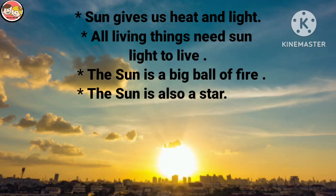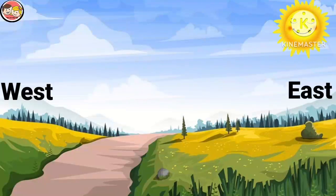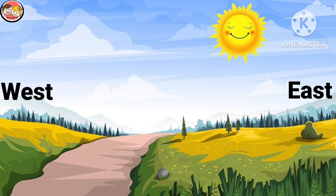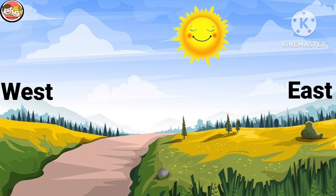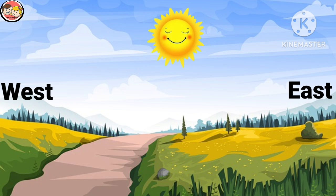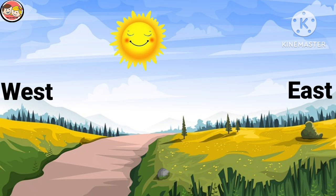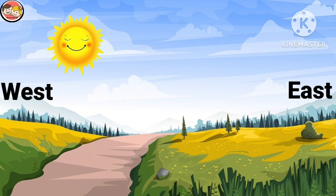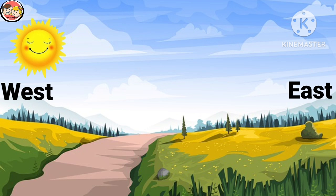The sun is a big ball of fire, and the sun is also a star. Every morning the sun rises in the east, which means the sunrise begins a new day. At noon the sun shines brightly and is right overhead. In the evening the sun sets in the west. When the sun sets, it is night.